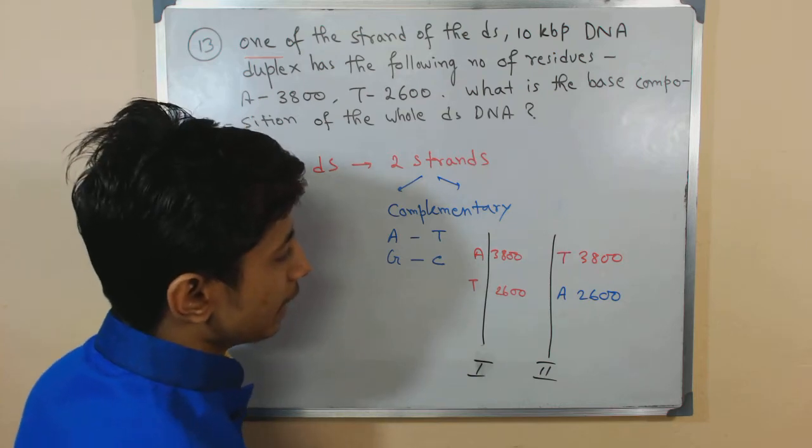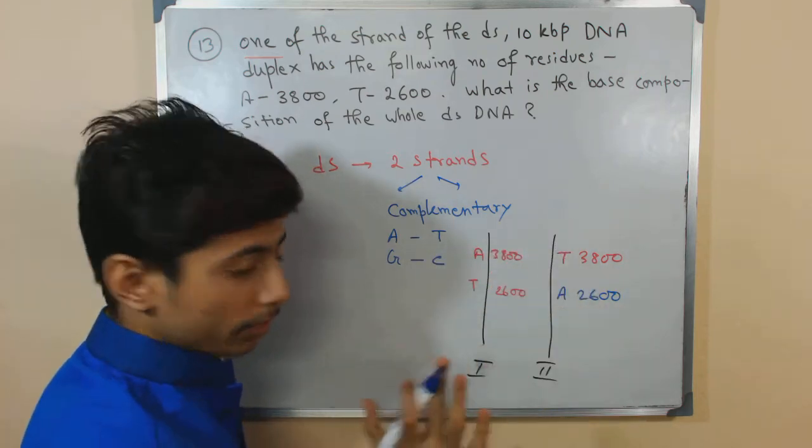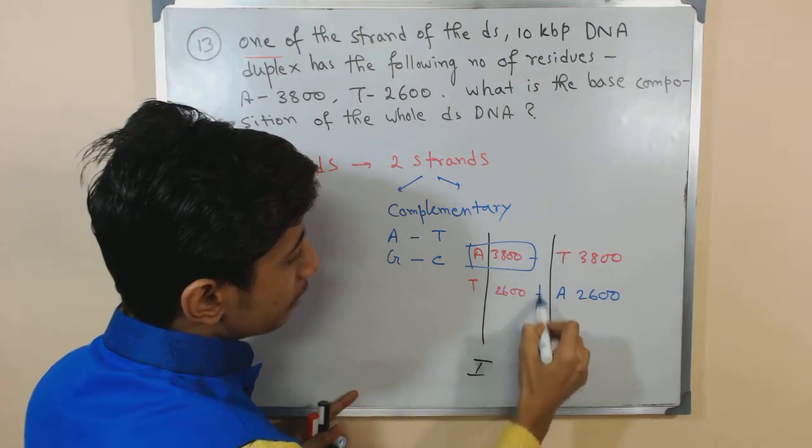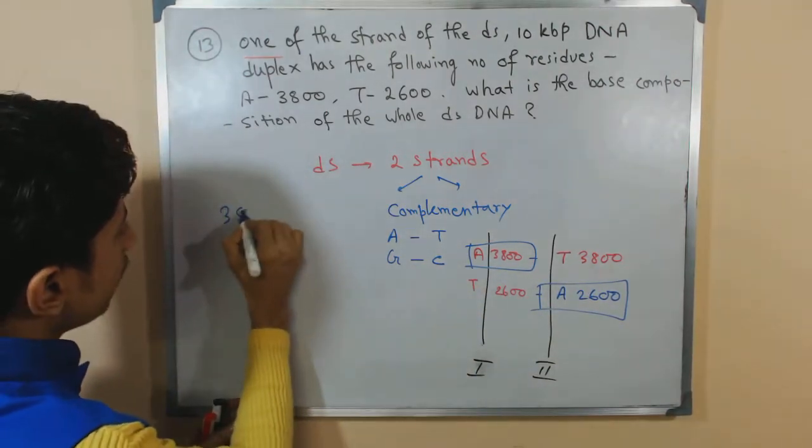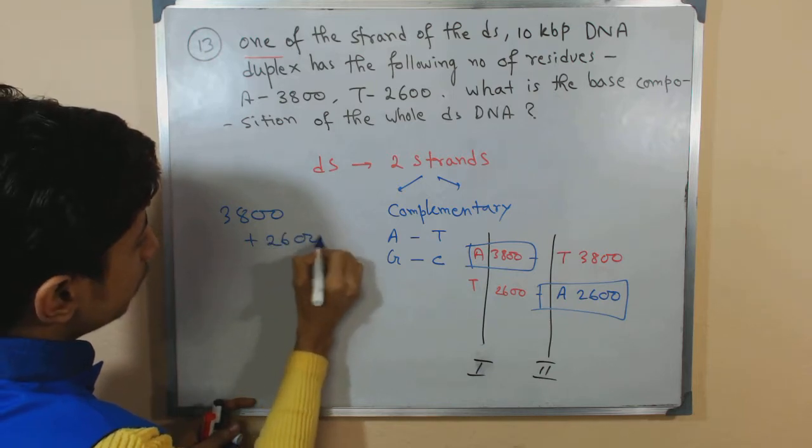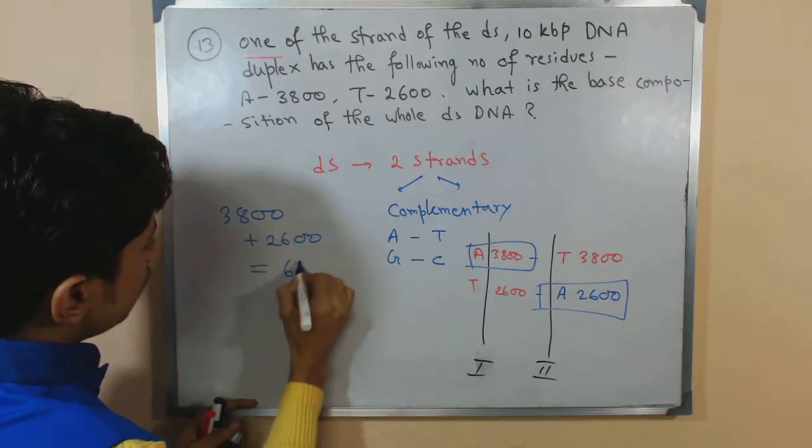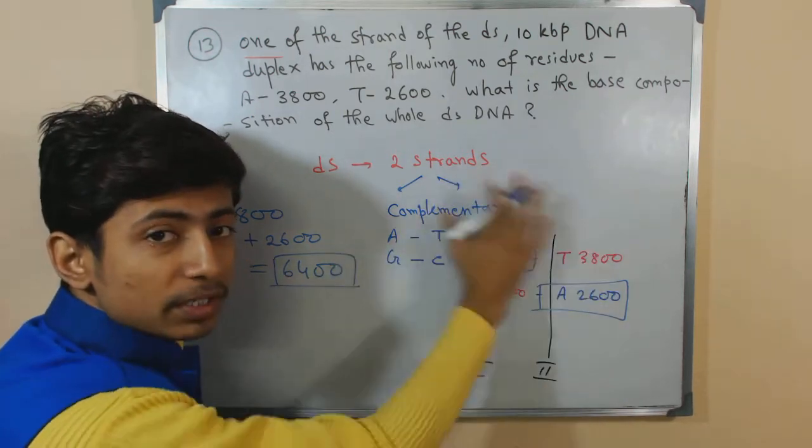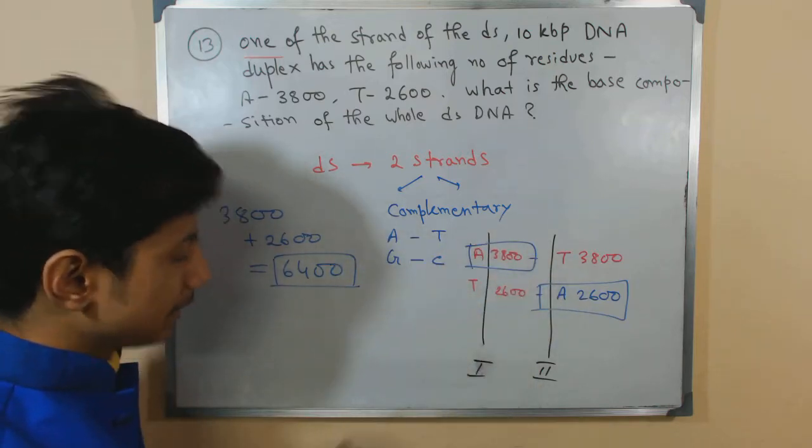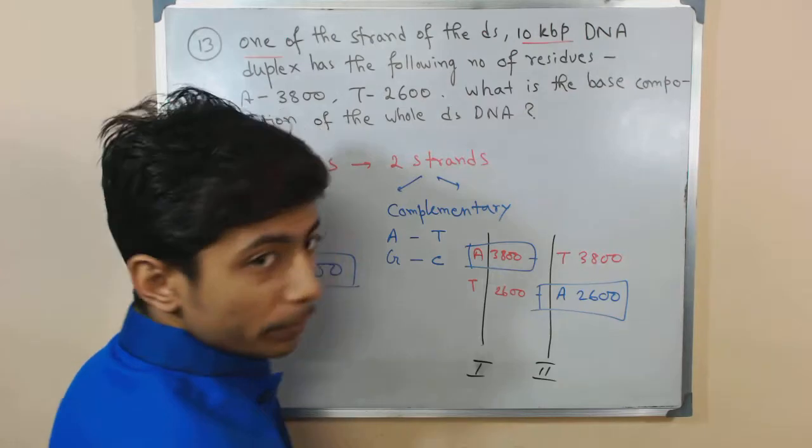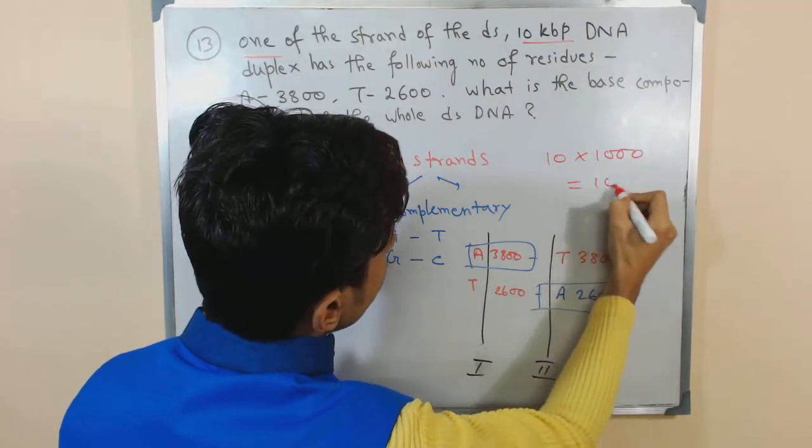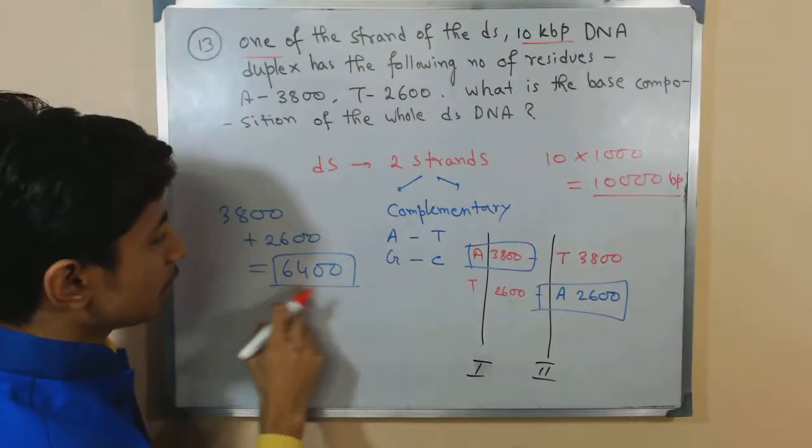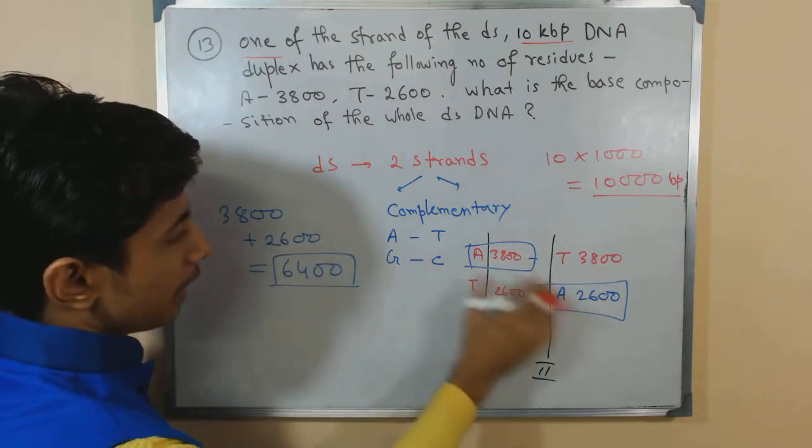In this whole double-stranded DNA, by looking at the pairing, we can say that adenine is 3800 plus 2600, totaling 6400. This is the number of adenine in the whole double-stranded DNA. They also told us the DNA is 10 kilo base pairs, meaning 10 times 1000.